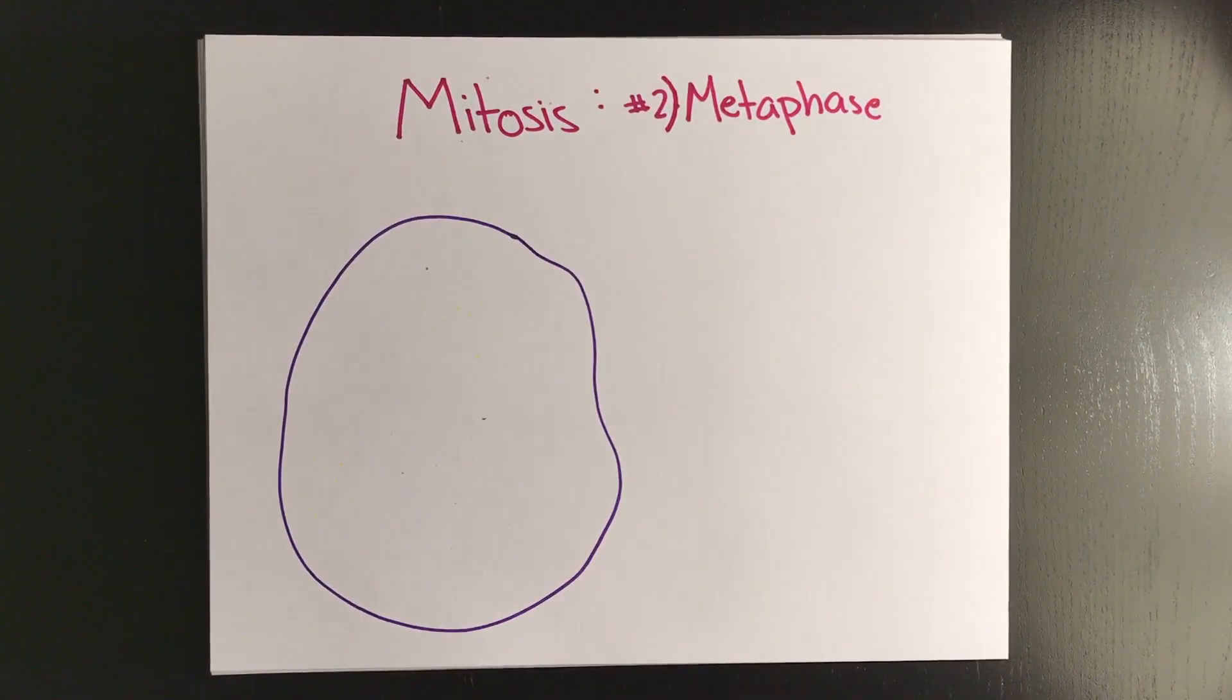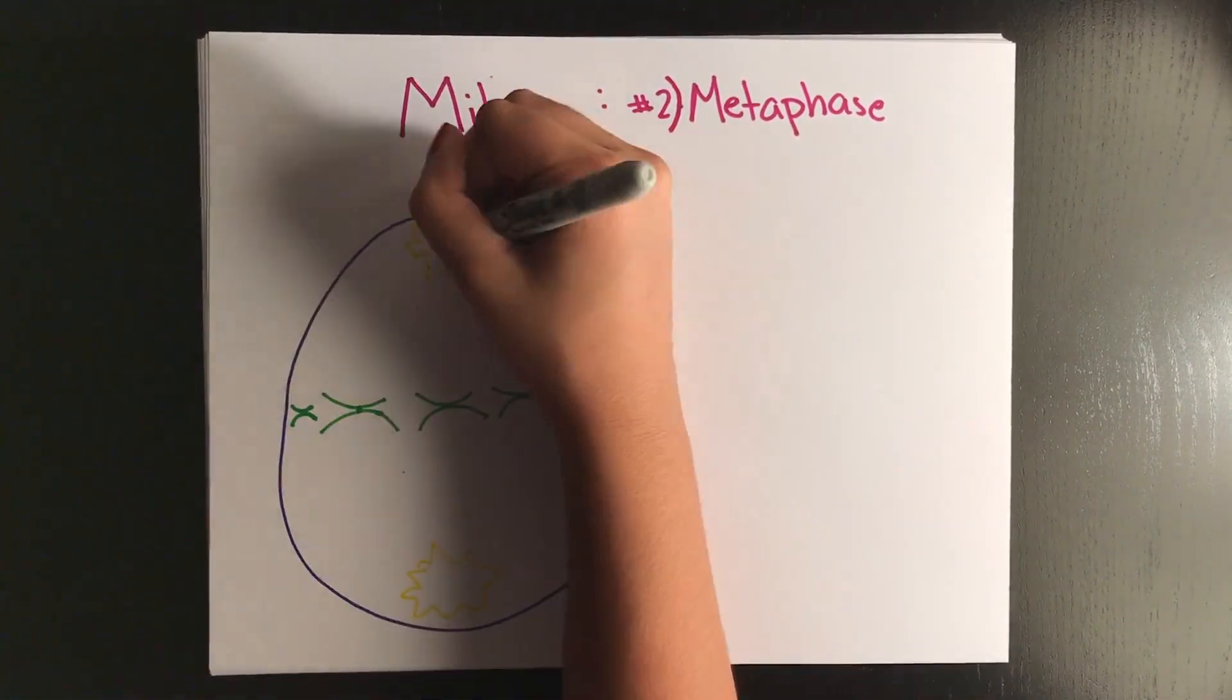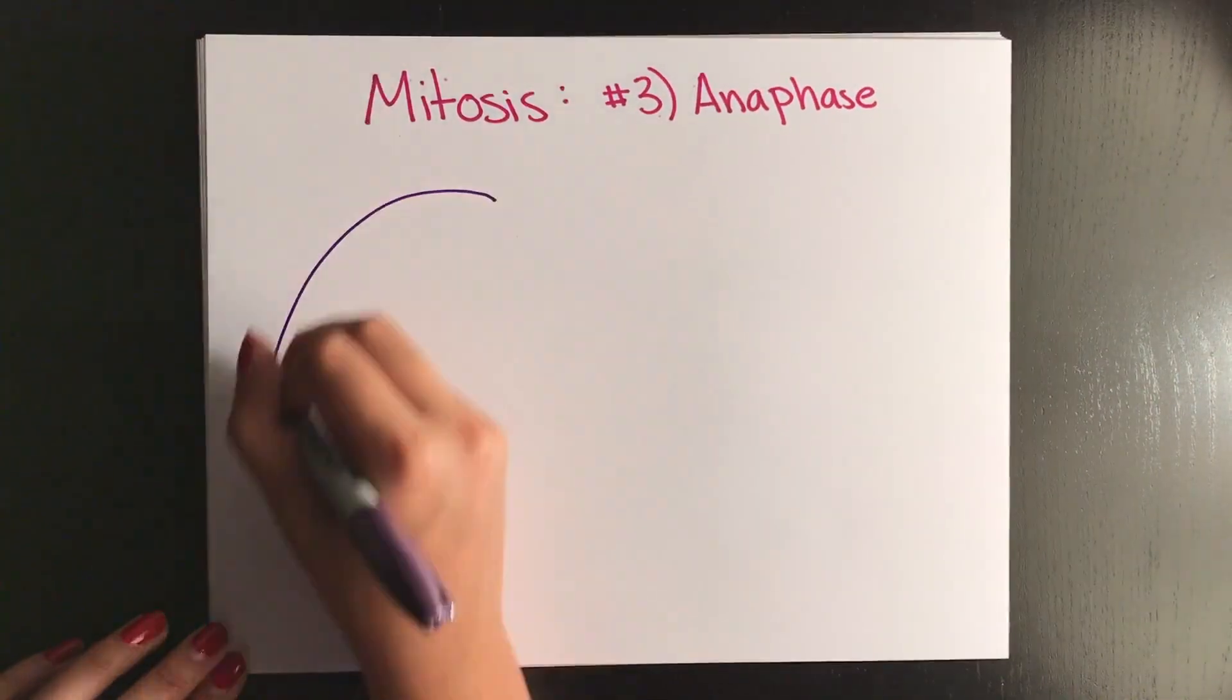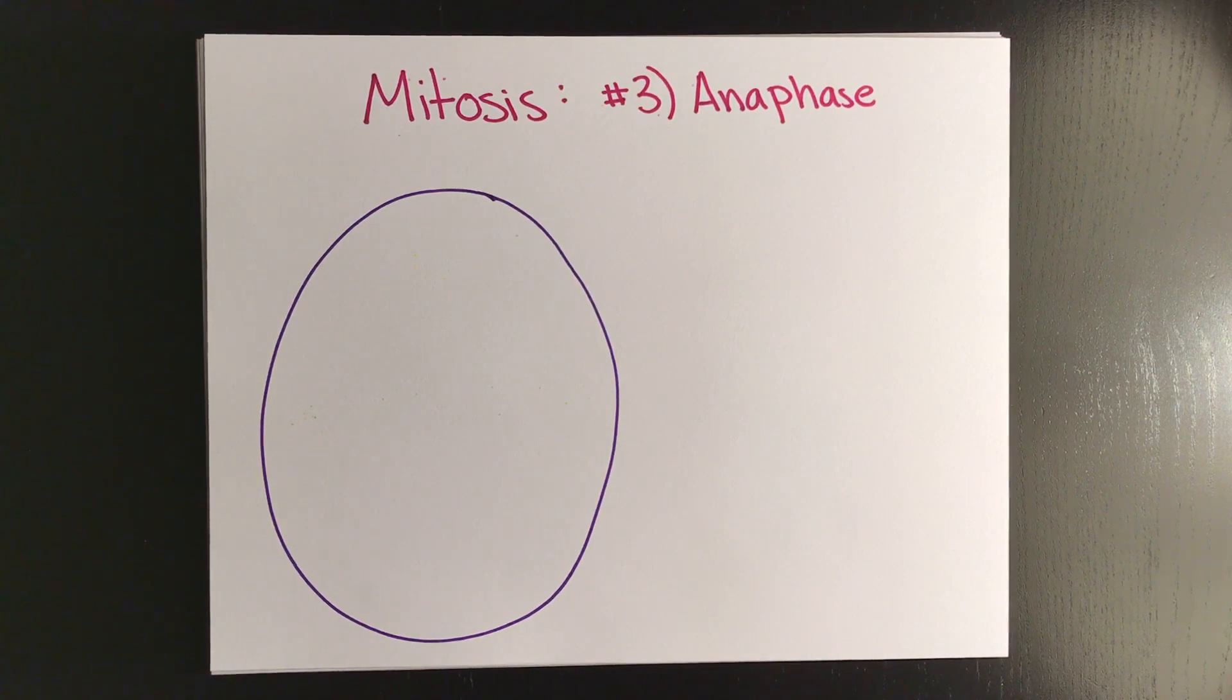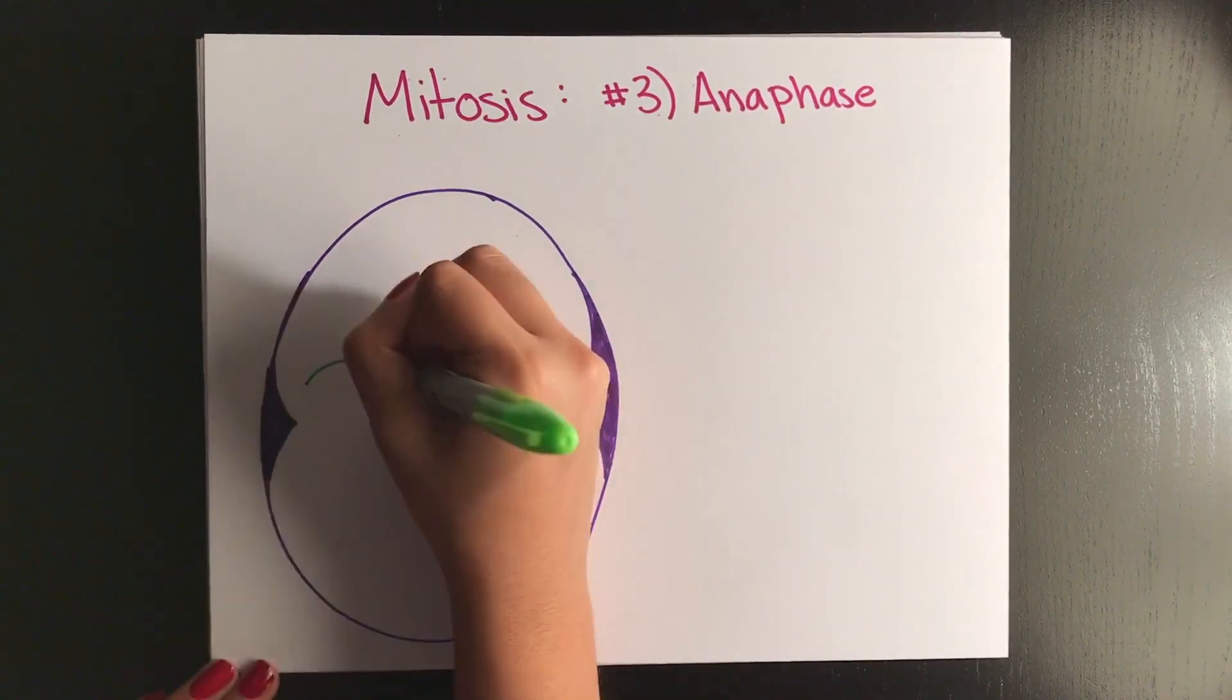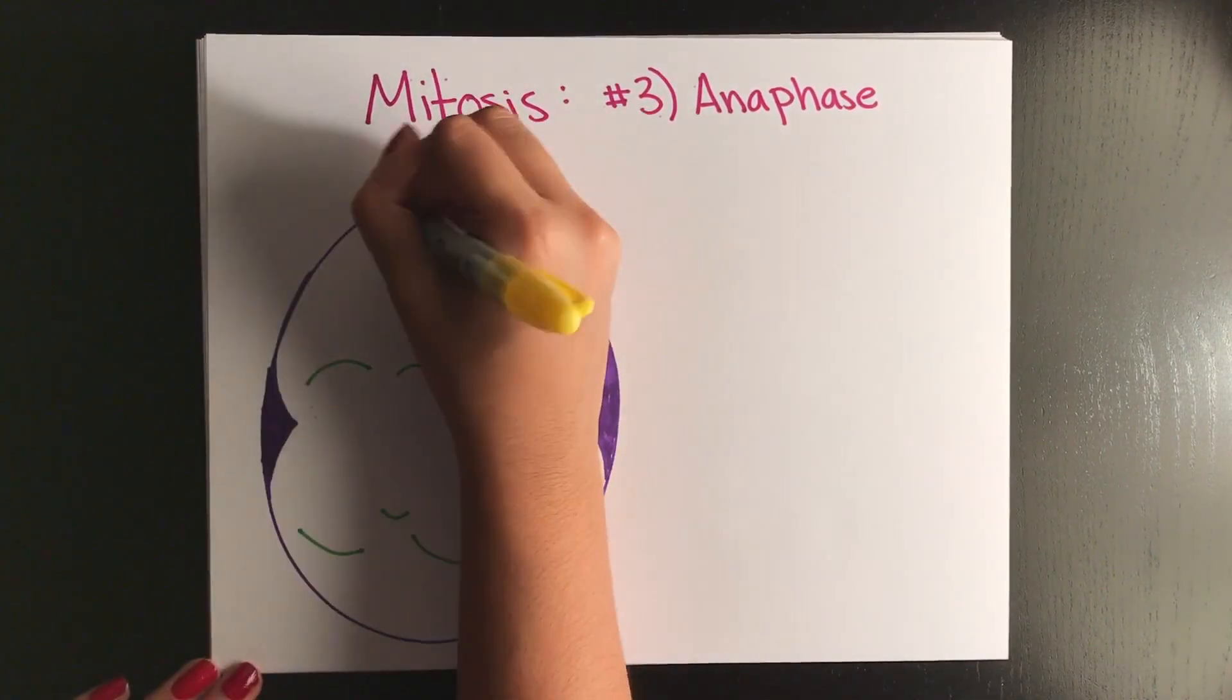Next, we have metaphase. During this time, chromosomes will line up in the middle of the cell, and this is called the metaphase plate. Step three is anaphase, where the centromere is split, or in other words, the two sister chromatids are split at the centromere so that each chromatid separates to their respective cells.